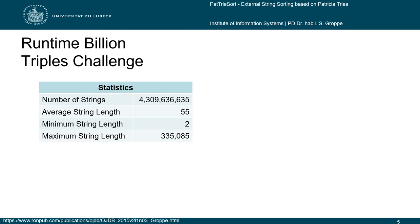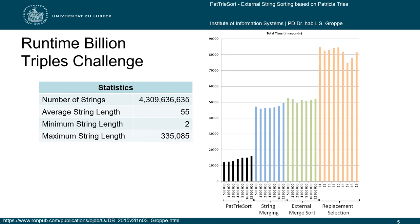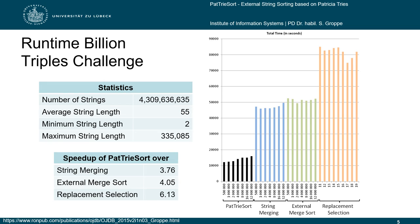The second set of experiments uses the billion-triple-challenge dataset of 2012 containing real-world data with irregular characteristics. This dataset contains over 4 billion RDF terms, which we sorted in our experiments. Many of the RDF terms are long URIs having long common prefixes, and hence these datasets are ideal for our algorithm. Not surprisingly, we achieve great speed-ups of over 3.7 in comparison to the traditional external merge sort approaches.